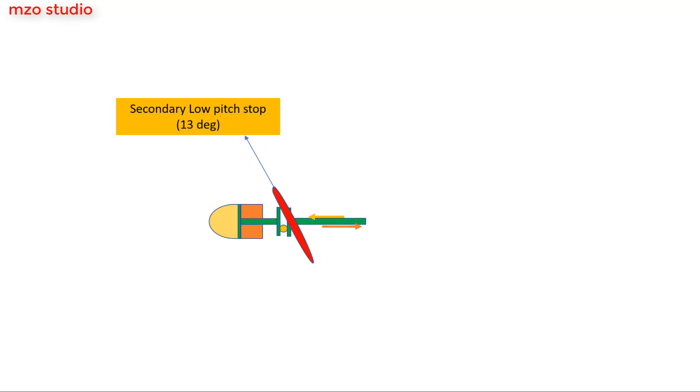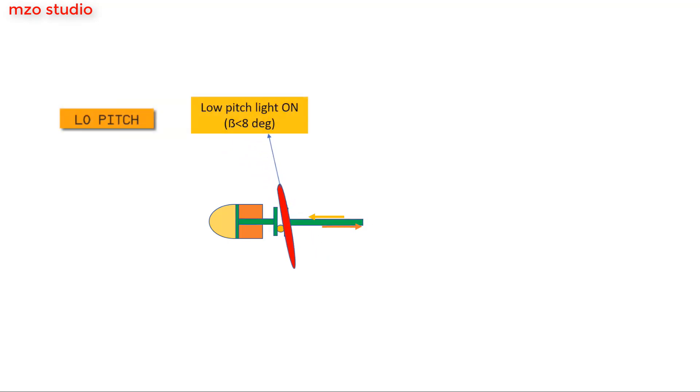Secondary low pitch protection is provided by a mechanical backup. When the blade angle is less than 8 degrees, the low pitch light comes on.